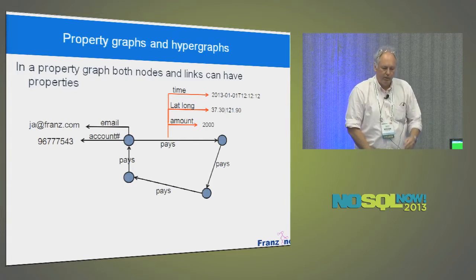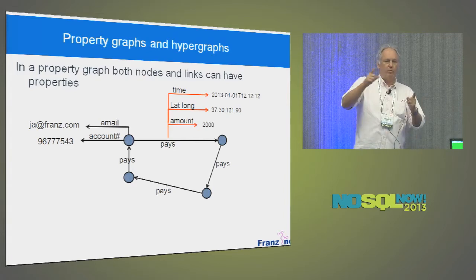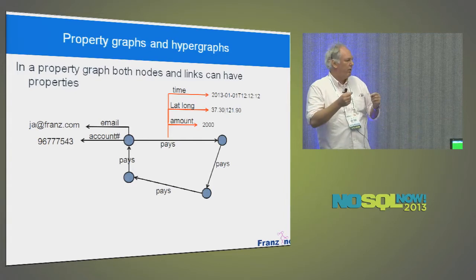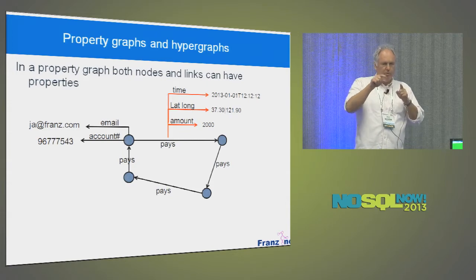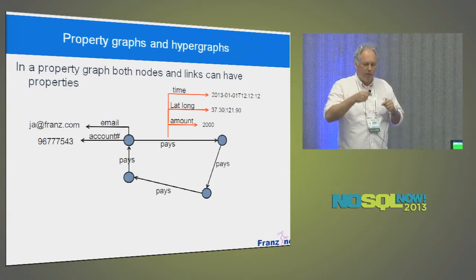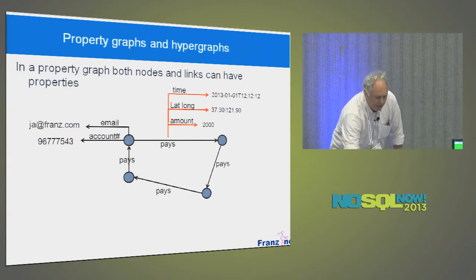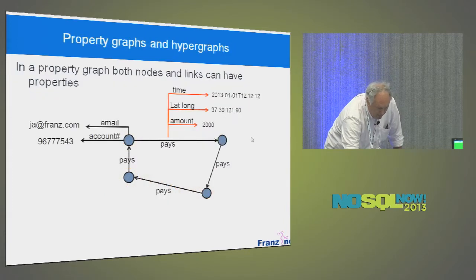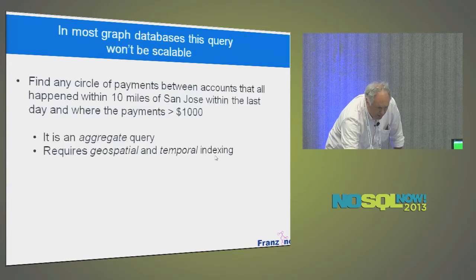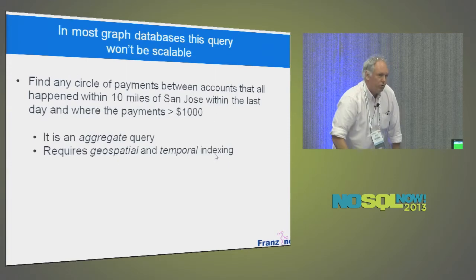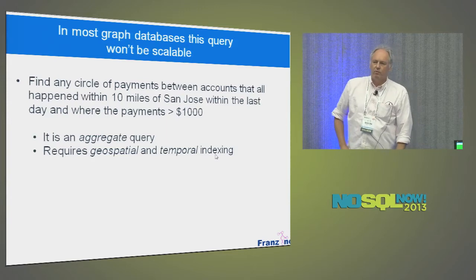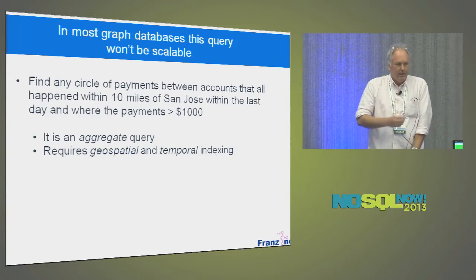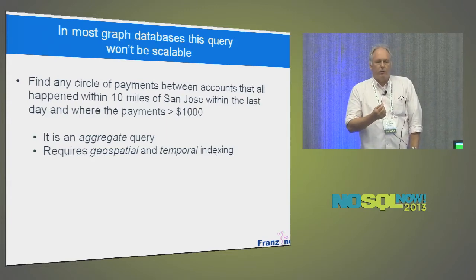Normally you would do this in a graph database — you have nodes, links between nodes. What makes a property graph is that the links between nodes also have properties. So here you see this person pays this person, and this 'pays' relationship has some properties, and other links have other ones. In most graph databases, this won't really scale because it's an aggregate query.